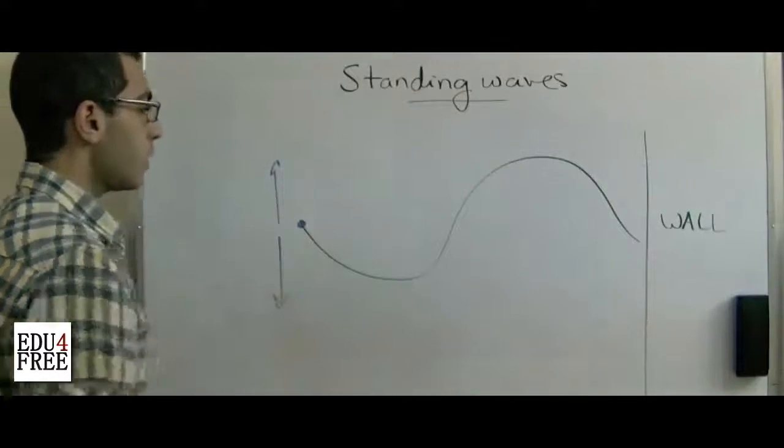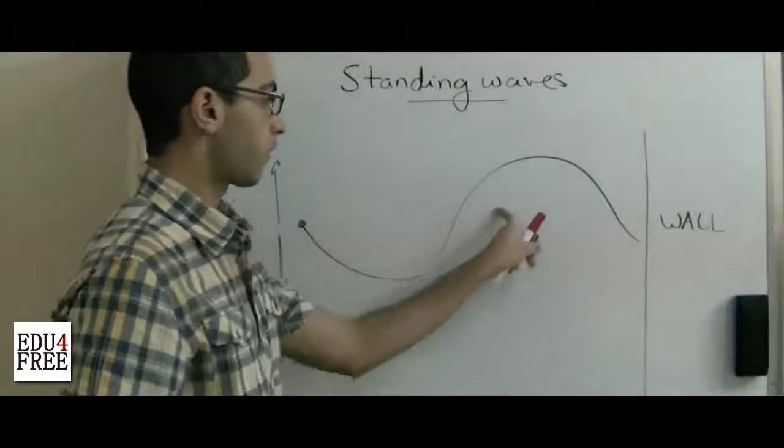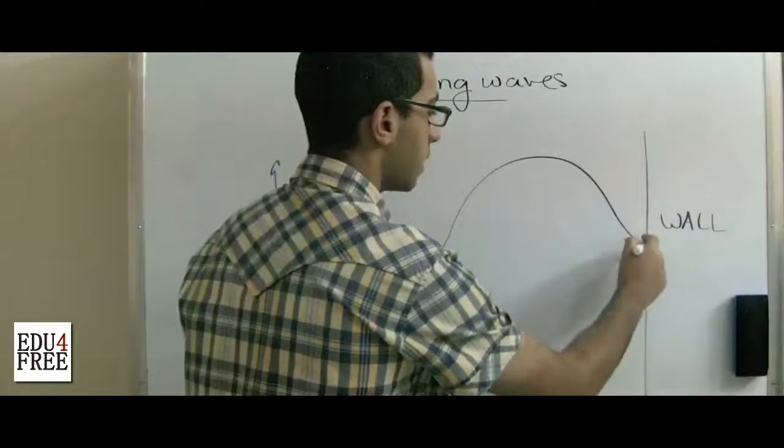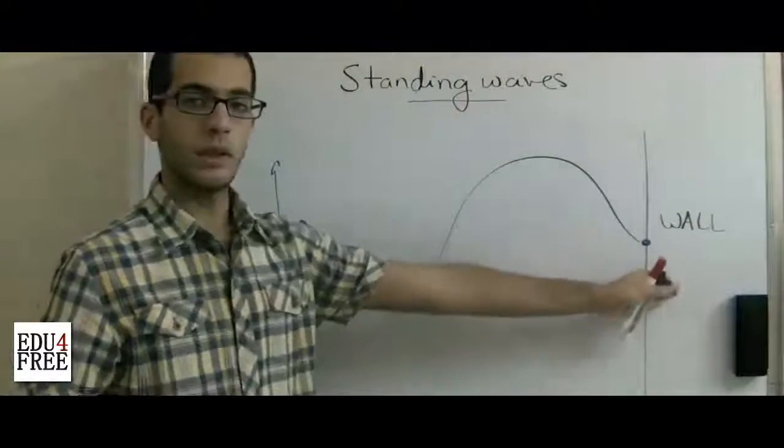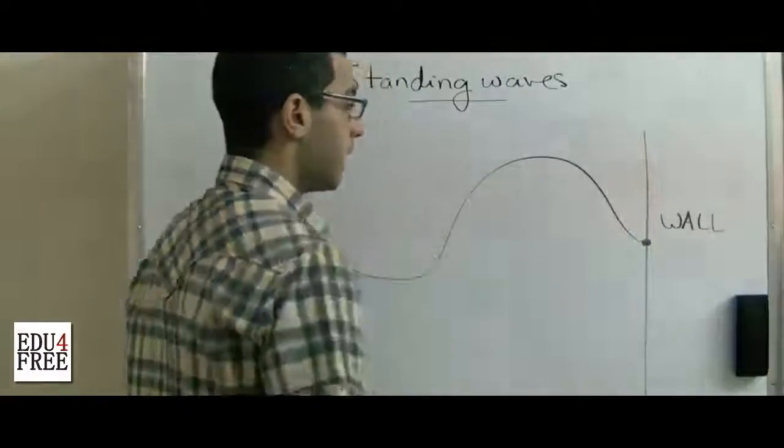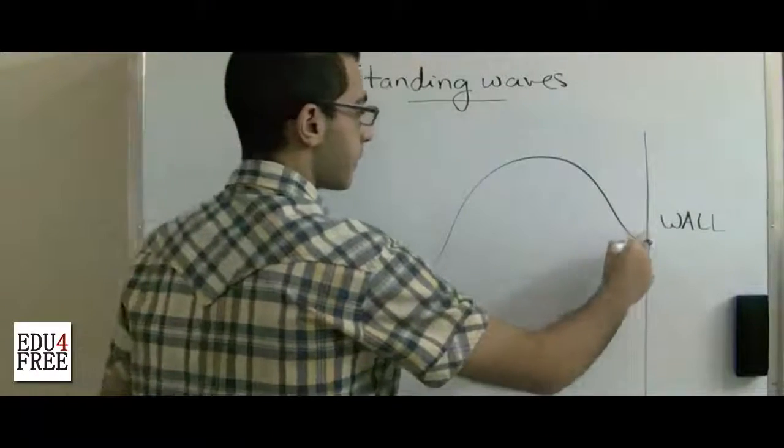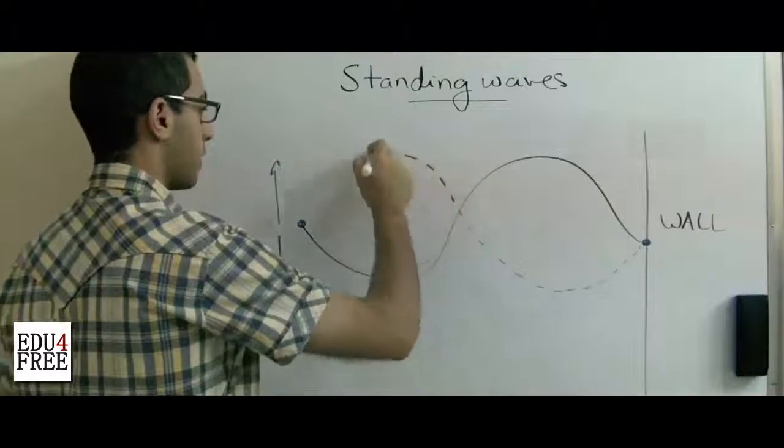First, when the wave moves through the rope, the rope reaches the point where the rope is tied to the wall. The motion won't continue because it will face this solid object, and accordingly the wave motion will be reflected, so that its shape will be something like this.